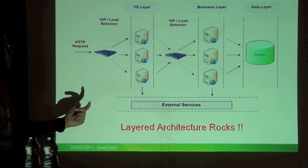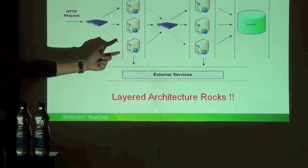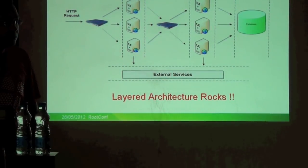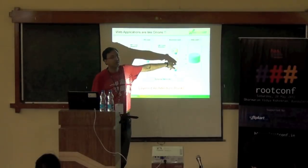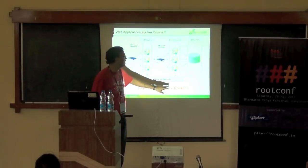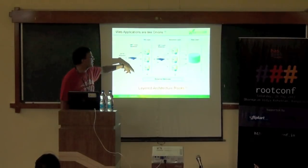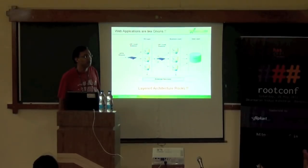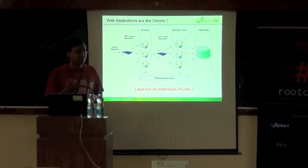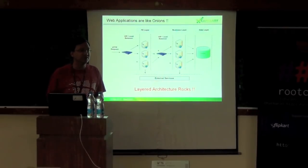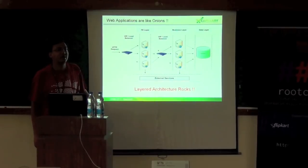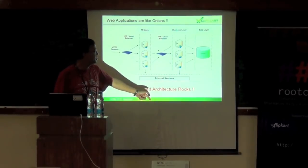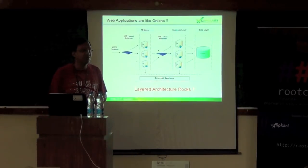One main advantage of this layered architecture is that it enables horizontal scalability at each and every layer, and it allows very loose coupling between your front-end and back-end. Two years down the line, if your app is so successful that 200 million people are coming and it's more intensive on the business layer, you can add more and more servers behind the load balancer. Your front-end and database layers are totally transparent to what's happening on the business layer. Layered architecture will always help in building scalable web apps in the long term.